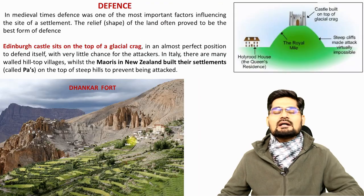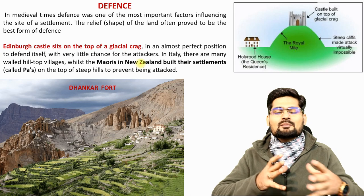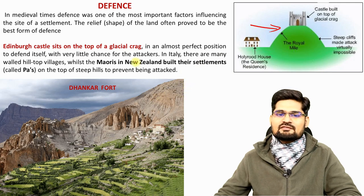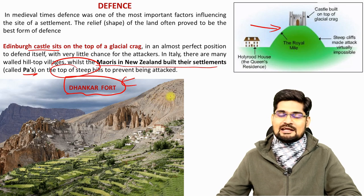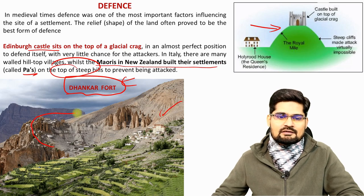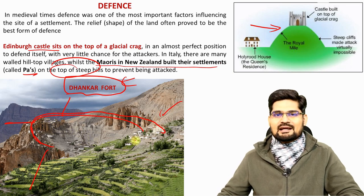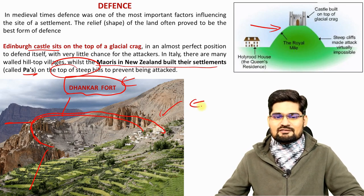Defense towns or defense-based settlements were very popular in the Middle Ages — castles and forts. Edinburgh Castle is a famous example. The Maoris in New Zealand built their settlements called Pa on hilltops. In India, examples include Dhankar and several other forts in the Maharashtra and Deccan regions, as well as the Himalayan region. These were vantage points that could look out in three directions to watch for approaching enemies.